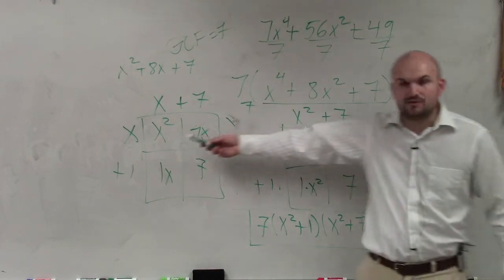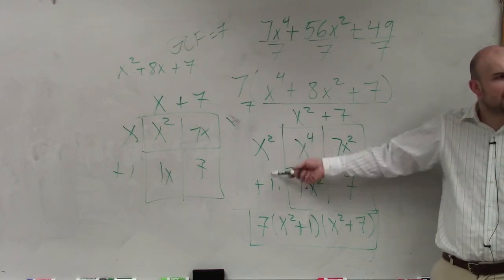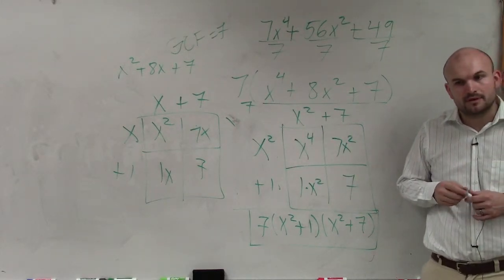But notice, we're not dealing with x squared. We're dealing with x to the 4th, which is OK. Now your first two terms are x squared and x squared. OK?